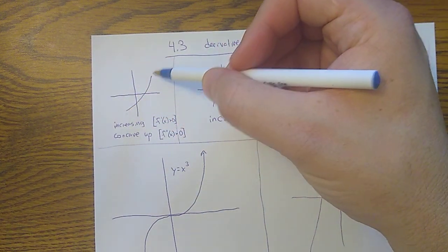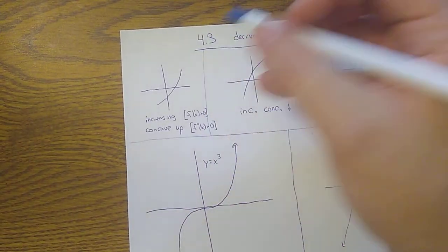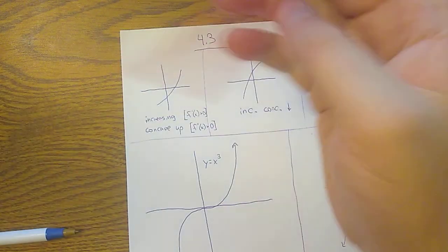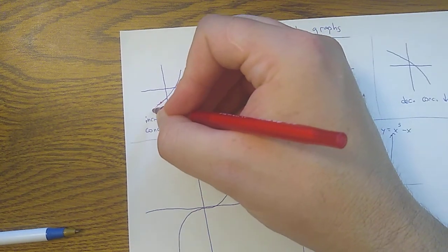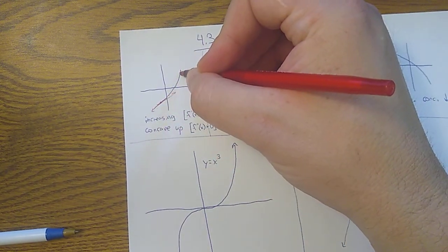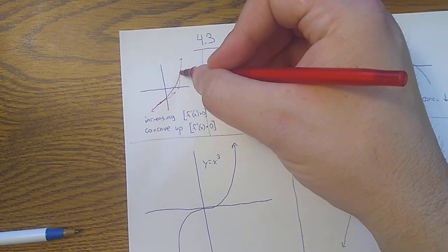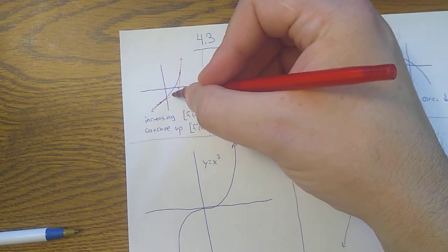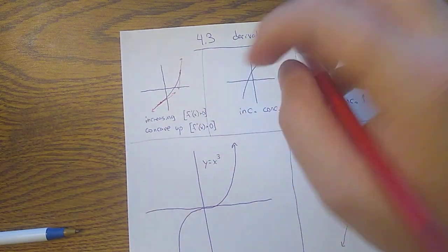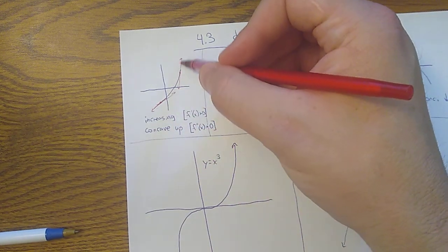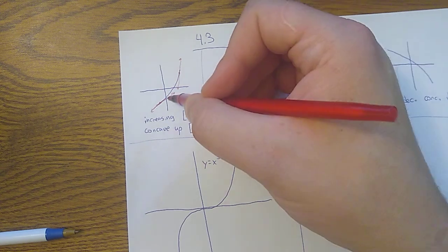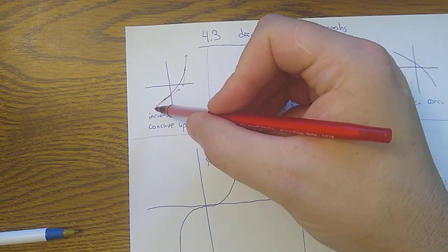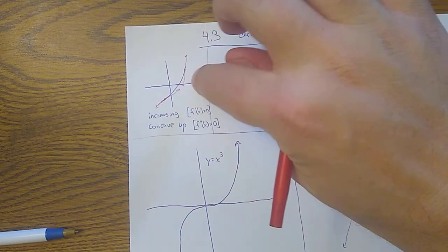What does it mean for the first derivative to be increasing? The first derivative is the slope of the tangent line, and to be increasing, the slope should be getting bigger as I move from left to right. If I draw a tangent line here and then another tangent line here, the slope of this second tangent line is larger — it's steeper, moving up faster. So as I move left to right the derivative increases. That's what concave up means: the slope of the tangent line is getting steeper and steeper.